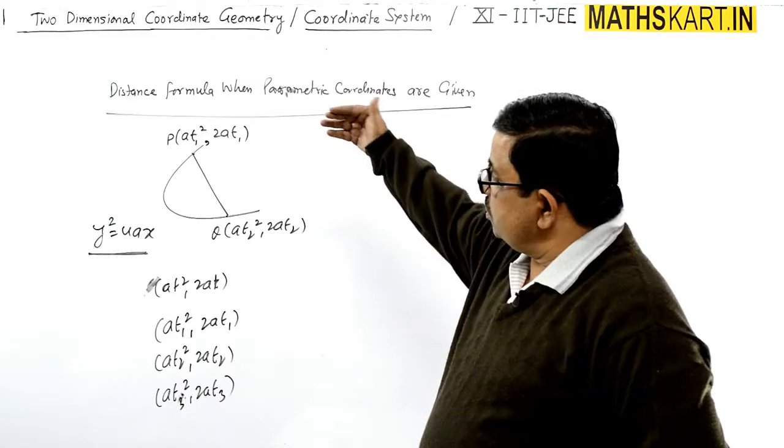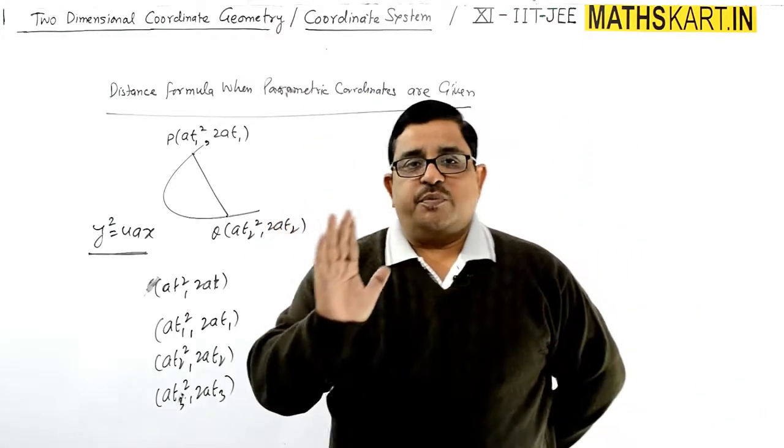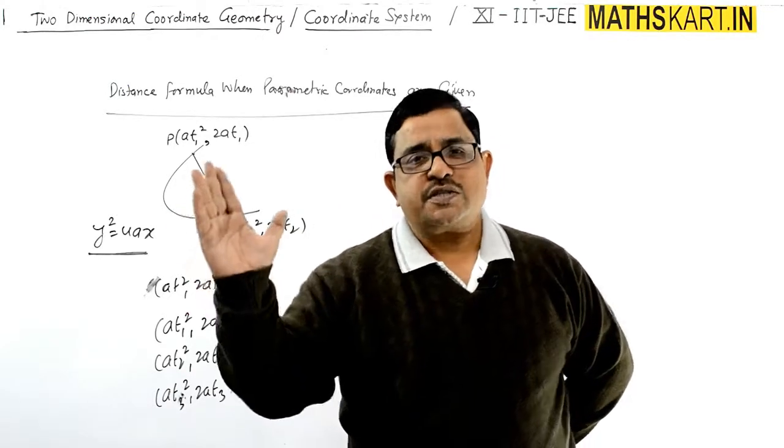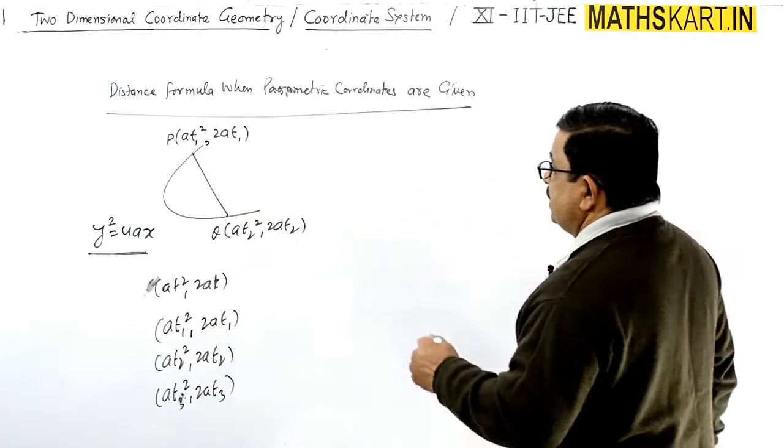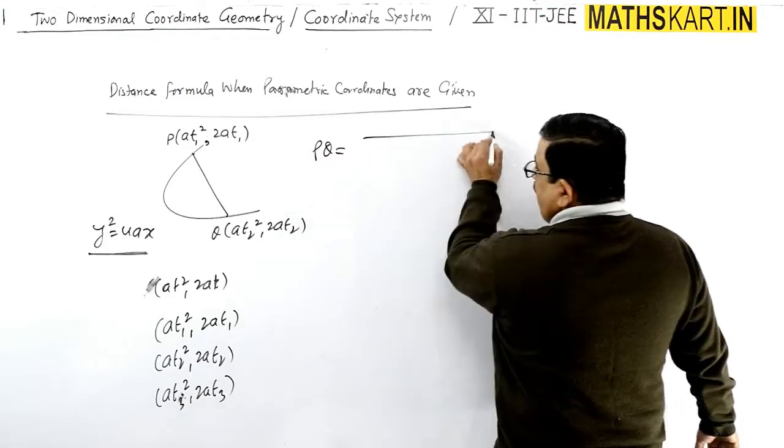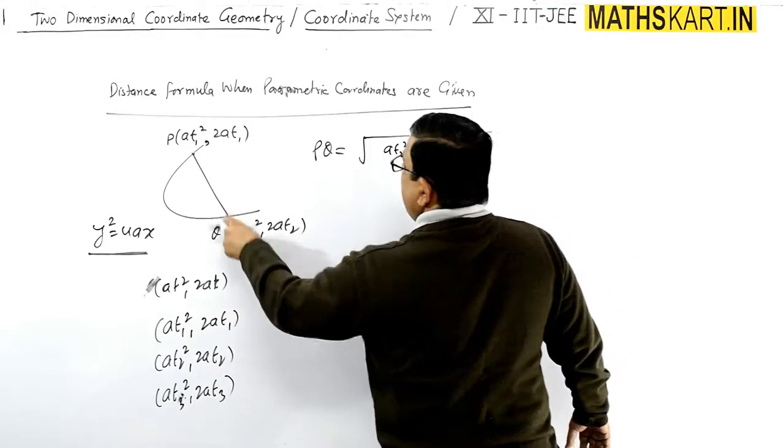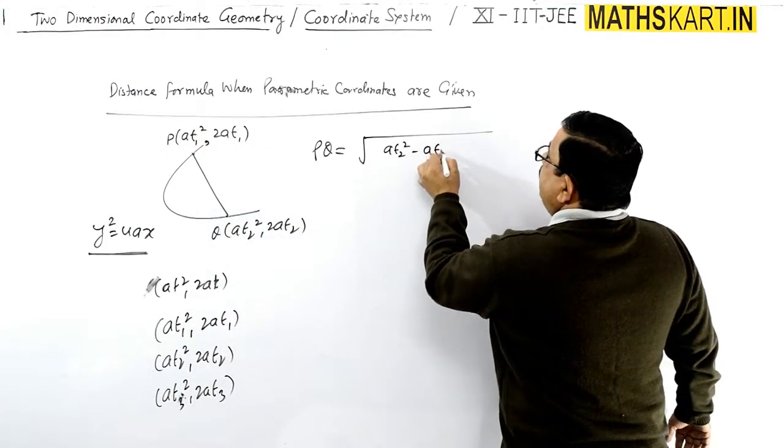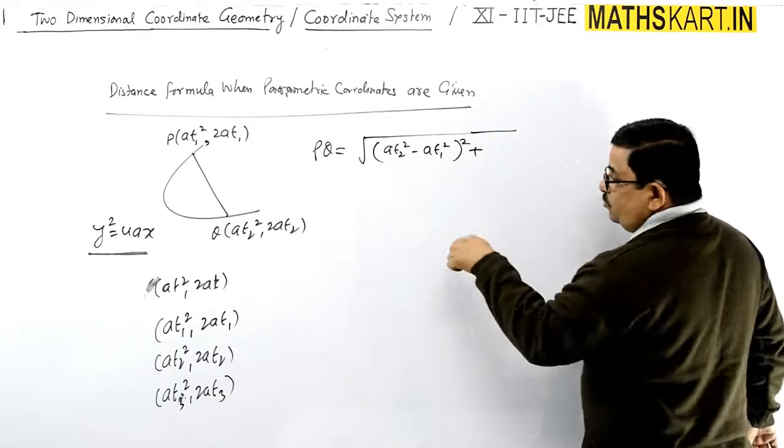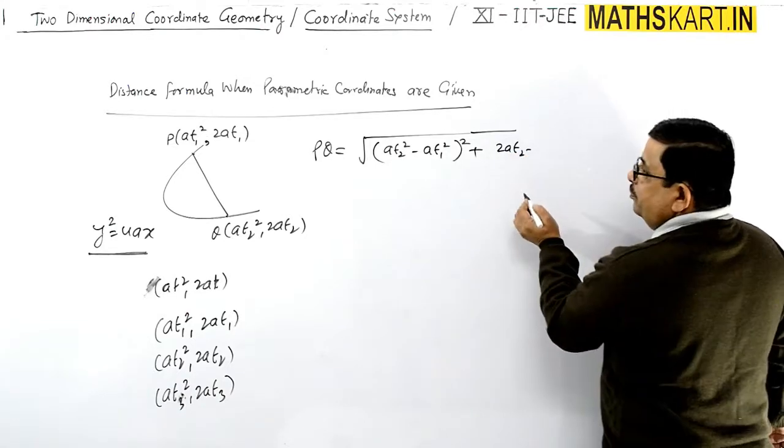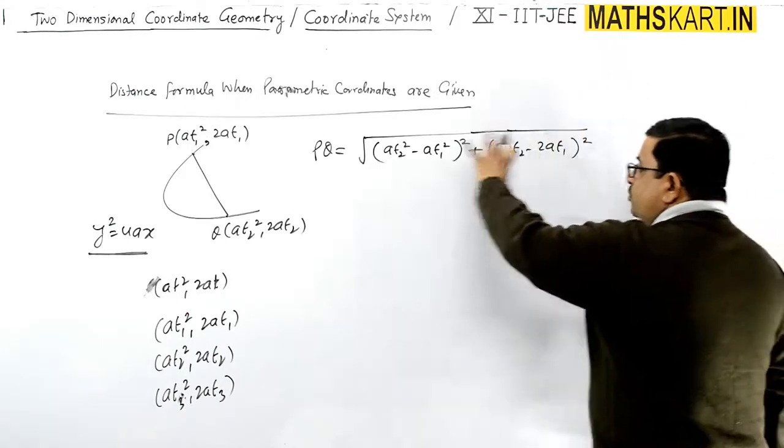We have to use the same distance formula as you have used into the Cartesian form. We have to write under root of x2 minus x1, so this is at2 square, this is the x2 minus x1, at1 square whole square, x2 minus x1 whole square, plus y2 minus y1, 2at2 minus 2at1 whole square, and then we have to simplify this.